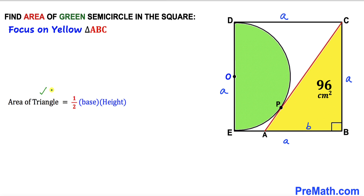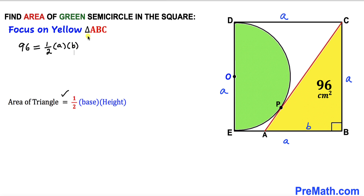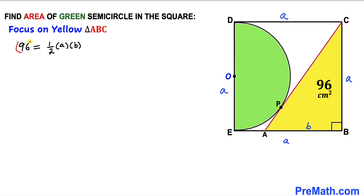Let's recall the area of a triangle formula: area equals half times base times height. In our case, the base is b, the height is A, and the area is 96. So we have 96 = (1/2) × A × B. Multiplying both sides by 2, we get 192 = A × B. So our A times B value is 192. Let's call this equation number 1.